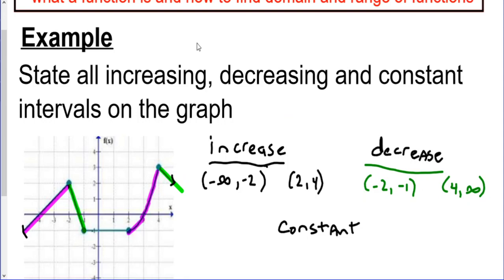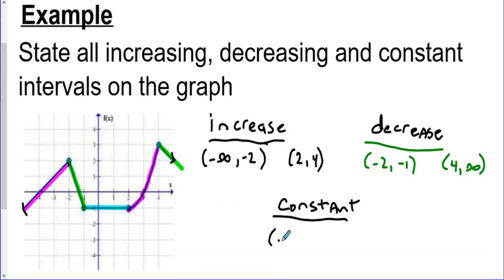The last section is the middle flat part — not going uphill or downhill — so that's a constant interval. It starts at negative 1 and ends at positive 2, giving us one constant interval from negative 1 to 2. That's all we're doing: looking at all sections of the graph and describing whether they're going uphill, downhill, or flat — which we call increase, decrease, and constant.